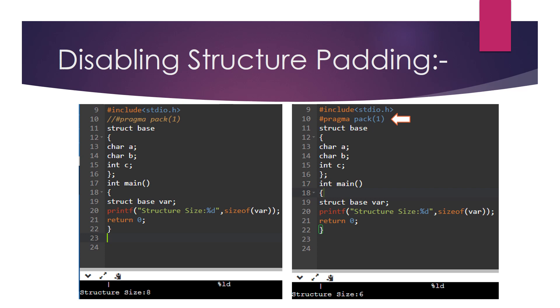One such way is by using pragma directive. There are two sample codes output captured here. The left one is with default structure padding enabled, where the structure size is 8 bytes. And the right one is by disabling the structure padding by using pragma directive. Here the size of the structure is 6 bytes, which is the same as occupied by its structure members.